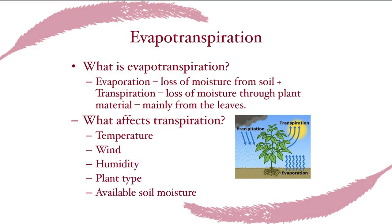Evapotranspiration combines two words: evaporation and transpiration. Evaporation is straightforward — sun comes out, it's warm, moisture gets lost into the atmosphere. Transpiration is more complicated: the plant uses it to move water, nutrients, and sugars throughout itself, losing moisture in the process. Tropical plants have big leaves because rain is frequent and abundant, so they don't worry about moisture loss.